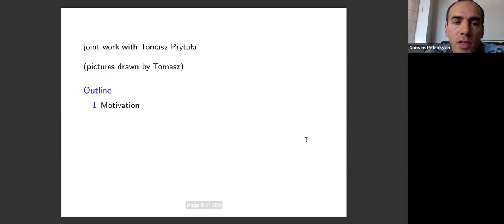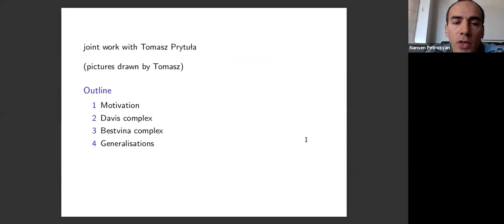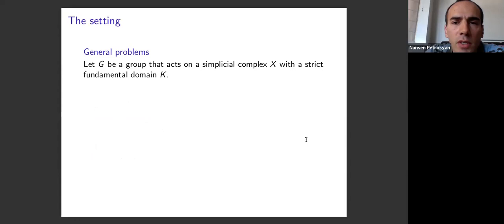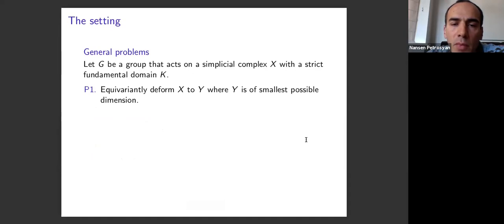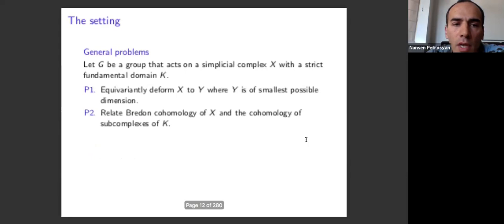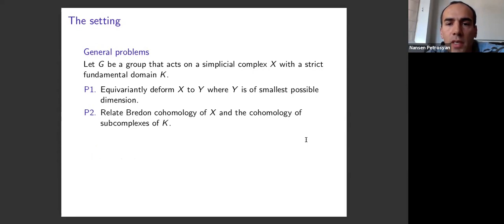The outline is to give some motivation about the problems we're considering, then discuss the Davis complex in the setting of Coxeter groups, talk about the Bestina complex, which is an analogous construction, and then discuss generalizations and applications of these methods. Let G be a group that acts on a simplicial complex X with a strict fundamental domain K. We're interested in whether we can deform X to Y where Y is the smallest possible dimension, and what the relationship is between Bredon cohomology of X and the cohomology of the subcomplexes of K.